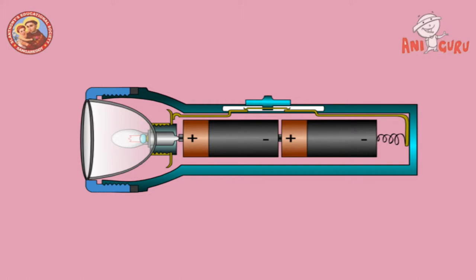The torch consists of a hollow cylindrical barrel in which cells are fitted. At one end of it, there is a lid with a screw which can be opened and closed.